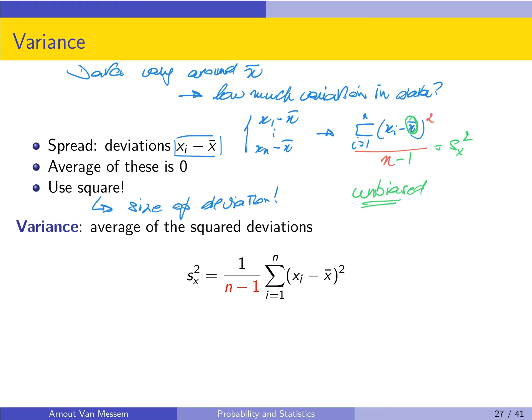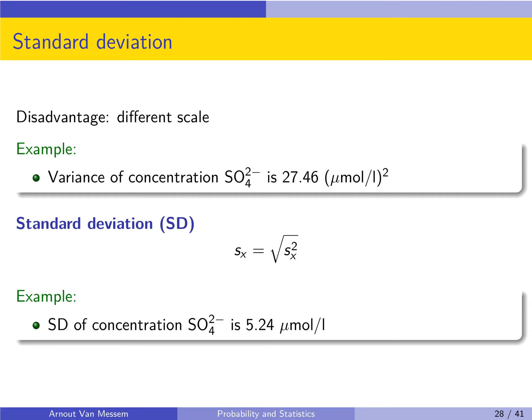From the formula it is easy to see that if you have large deviations — a large spread — the value of the variance will also become larger. This formula equals sx squared, which we call the variance of x. The disadvantage of the variance, however, is that it is not on the same scale as the data. If x was the length of something, then the measurements are in meters, but the variance is in meters squared — there is no correspondence between the scale of the data and the scale of the variance. So we take the square root of the variance, and that we call the standard deviation, abbreviated as SD.